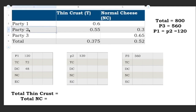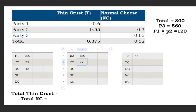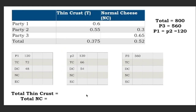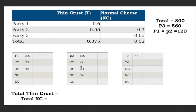For party 2, 55 percent of 120 are thin crust pizzas. 50 percent of 120 is 60, and 5 percent is 6, so the total is 66 thin crust. The remaining 54 must be deep crust. Furthermore, 30 percent of party 2's pizzas are normal cheese — 30 percent of 120 is 36. So subtracting from 120, we get 84 extra cheese pizzas for party 2.